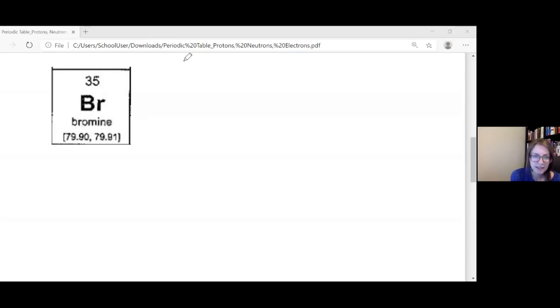Alright, taking a closer look at any individual element, we can look at what's provided to us either on the periodic table or in a question and know how many protons, electrons, and neutrons an atom has. Looking at bromine as our example, this is a snapshot from your periodic table. The number on top here we call the atomic number, and the atomic number is always equal to the number of protons.